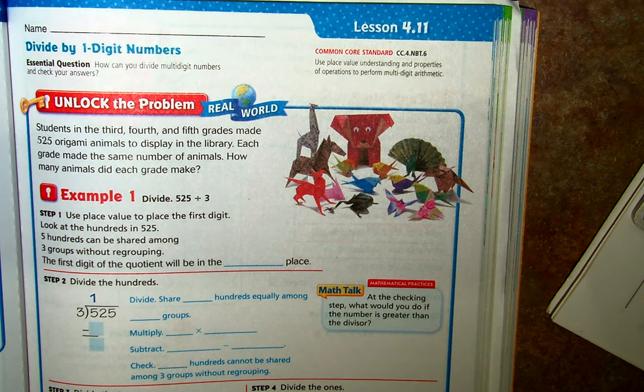We're going to use place value understanding and properties of operations to perform multi-digit arithmetic, and that's what our standard says.